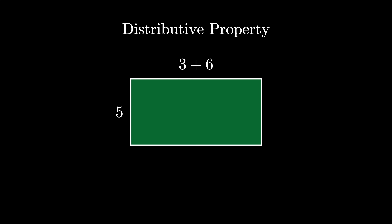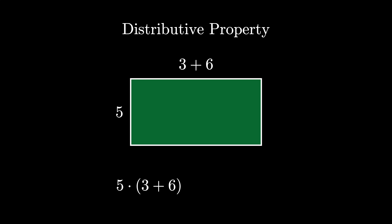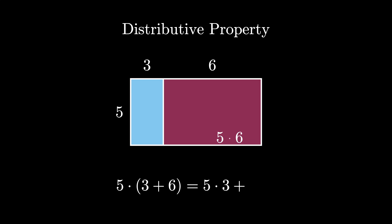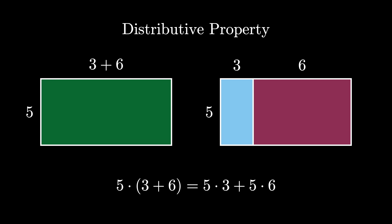In the example here, we imagine a 5 by 9 rectangle, but we think of 9 as 3 plus 6, so we have a 5 by (3+6) rectangle. The area is 5 times 9, or 5 times the quantity 3 plus 6. On the other hand, we can think of the rectangle as two rectangles: a 5 by 3 and a 5 by 6, with areas 5×3 and 5×6. So 5 times the quantity 3 plus 6 equals 5 times 3 plus 5 times 6.